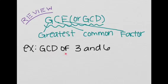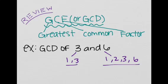We want to find the GCD of 3 and 6 as a quick review. What are the factors or divisors of 3? Well they're 1 and 3. What are the factors or divisors of 6? It's 1, 2, 3, and 6. Now what is the greatest common factor of these two sets of numbers? Well it's 3. So the GCD of 3 and 6 is 3.